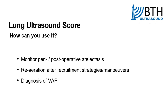The lung ultrasound score can also be used to monitor deterioration. The higher the score, the worse the lung aeration. So if that score starts to creep up over a period of time, you can monitor multiple pathologies as that lung tissue potentially deteriorates. One example could be ventilator-acquired pneumonia, but there is absolutely no reason why it couldn't be hospital-acquired pneumonia or any other pathological processes.